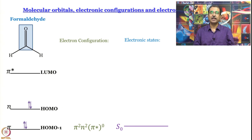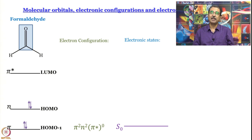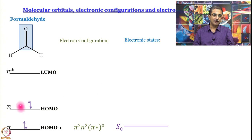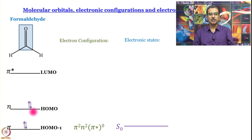One can develop a more correct treatment of the singlet-triplet business by talking about spin wave functions, but for the purpose of this course we are not going to go there. Looking at the simple picture: the 4 electrons we have drawn are all paired up. Since all electrons are paired, that is called a singlet state.